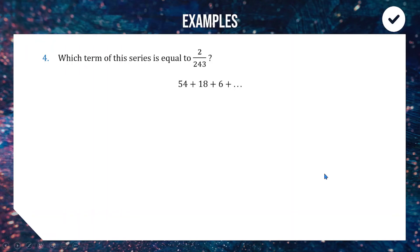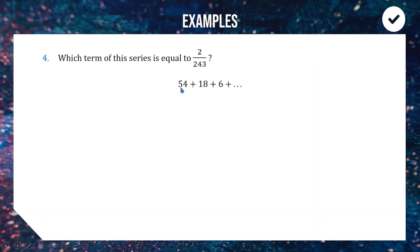Up next — similar idea — we have a geometric sequence and want to find which term equals 2 over 243. Our value of a is 54. To find r, we work backwards: 18 divided by 54 gives one-third. So 54 times one-third equals 18 — that confirms our constant multiplier r is one-third.